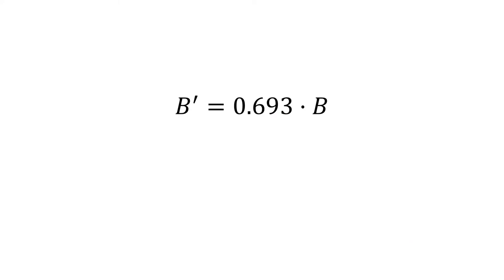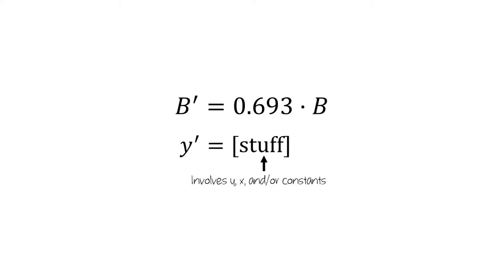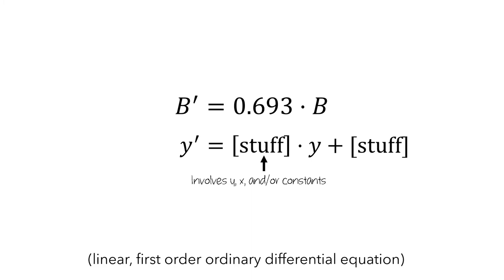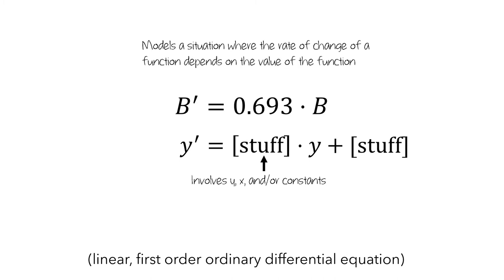This is an example of a differential equation. In general, a differential equation is of the form y', a rate of change, is equal to some stuff, where the stuff can involve y, x, and/or constants. In the example above, and most of the examples we'll see in this course, we'll have differential equations of the form some stuff times y plus some other stuff. This type of differential equation is technically called a linear first order ordinary differential equation. In general, a differential equation models a situation where the rate of change of a function depends on the value of the function.